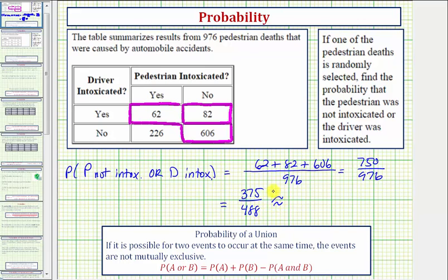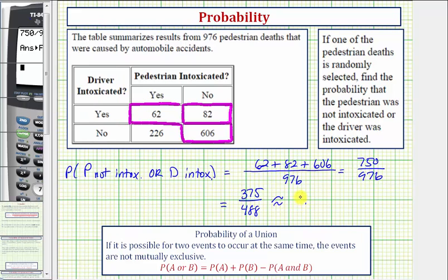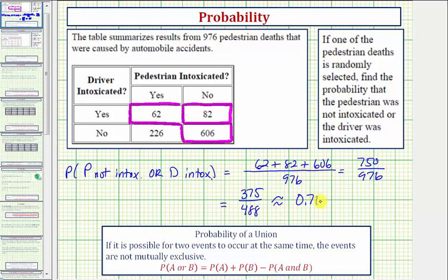And for a decimal approximation, we'll say approximately 0.7684, which as a percentage would be 76.84%. If you found applying the probability formula difficult, I hope you'll find this approach helpful. Thank you for watching.